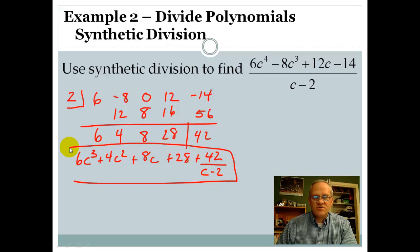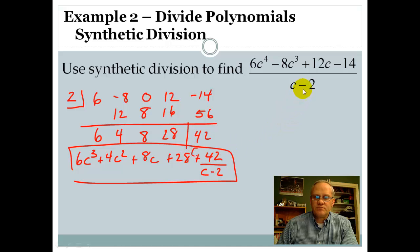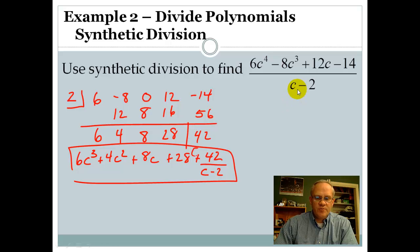We set up the remainder the same way as we did in long division — your remainder divided by the original divisor, which is c minus 2 up there. Let's take a look at one more example. This third example is where it gets a little bit trickier, but just pay attention.